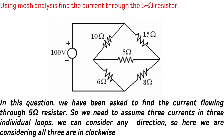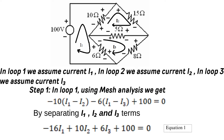Using mesh analysis, find the current flowing through the 5 ohm resistor. We need to assume three currents in three individual loops. We consider all three currents in the clockwise direction: I1 in the first loop, I2 in the second loop, and I3 in the third loop.